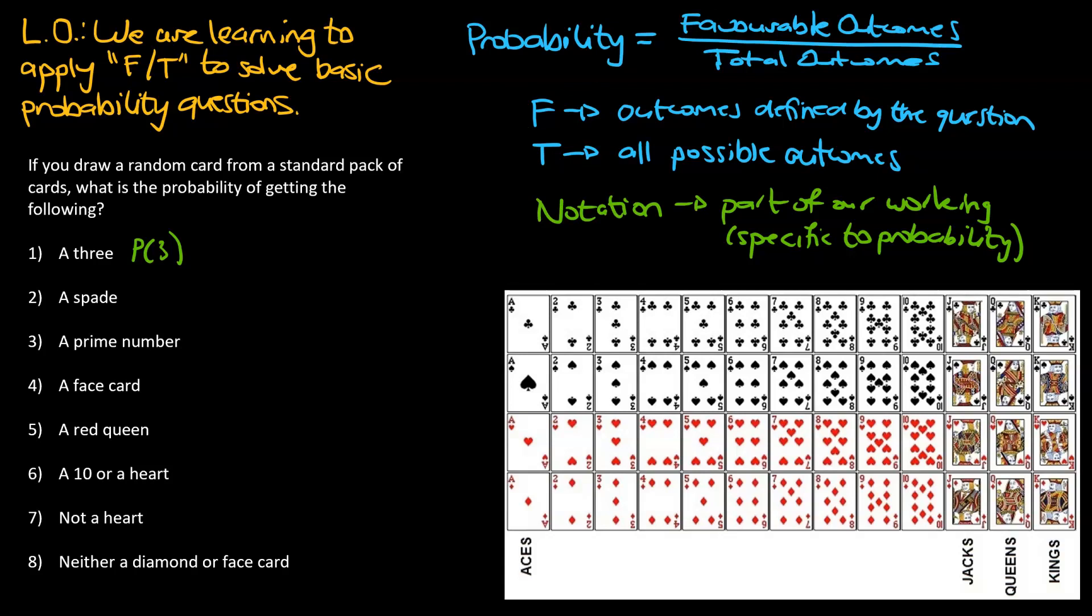So the probability of a 3, that's always going to be equal to F over T. From there, I want us to start thinking about the total. The total one should we be thinking about first. So we're looking at a standard pack of cards, and we've actually got an example or a layout of all of those cards down the bottom right. What is the total, or how many different possible outcomes are there? So if you have a look, there goes 1, 2, 3, 4 down this way, and then there's 13 down the long way. So 4 times 13, that gets us to 52. So 52 cards in a standard pack.